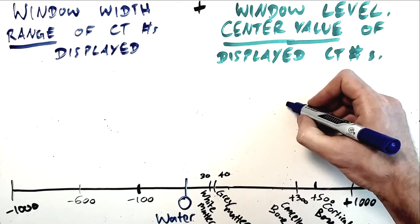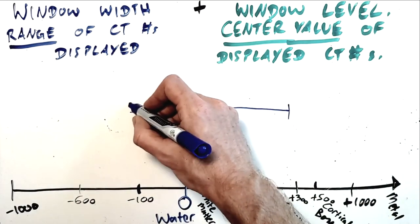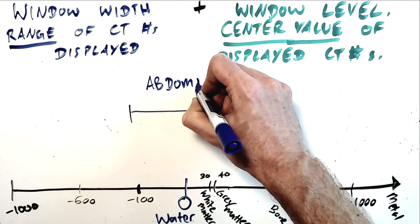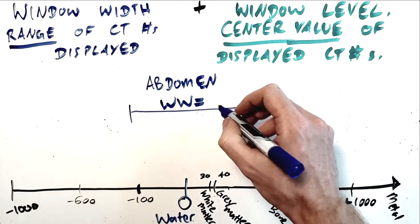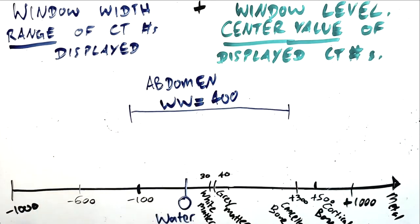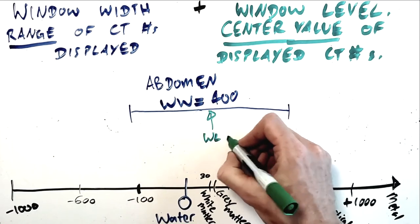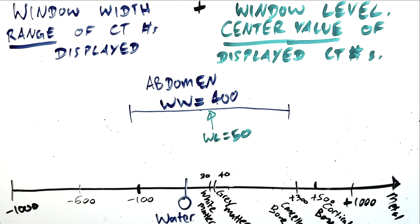Now this is just a tidy example because it happens to land our lower edge at zero, but another example with a more intermediate window width would be an abdomen window, which has a window width of around 400 and a window level of 50. So this would mean that our range of grays will span structures with a CT number between minus 150 and plus 250.